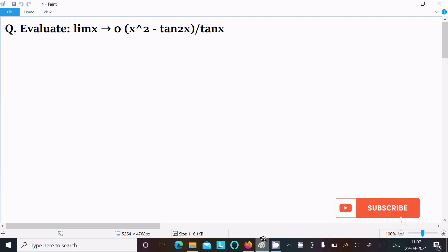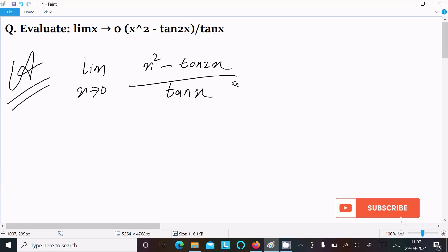Today's lecture, I'm going to find the limit as x tends to 0 of x squared minus tan2x divided by tanx. So let's see the answer. First, you are writing the given limit x tends to 0, x squared minus tan2x divided by tanx. We can easily achieve the output if I use this formula.